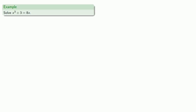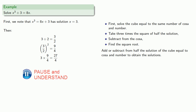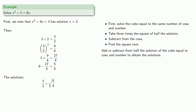Cardano solves x³ + 3 = 8x. First, solve the related equation x³ = 8x + 3, which has solution x = 3. Now take three times the square of half the solution: half of 3 is 3/2, squared is 9/4, times 3 is 27/4. Subtract this from the cosa: 8 - 27/4. One interesting feature is that Cardano gives two solutions: we add or subtract from half the solution (3/2). Adding √(5/4) gives one solution, and subtracting √(5/4) gives another solution.